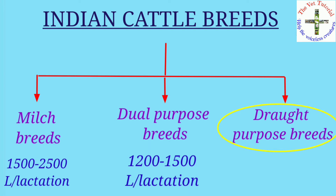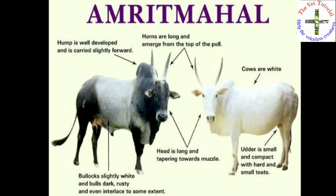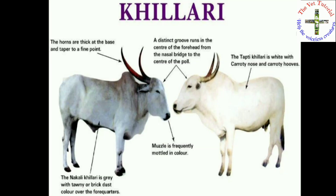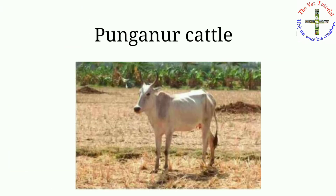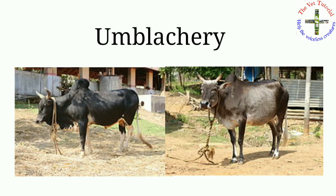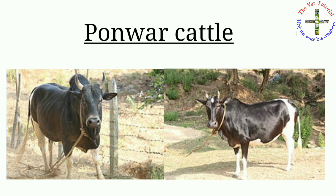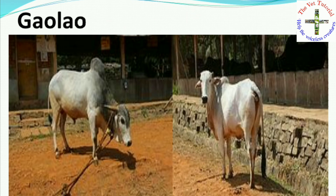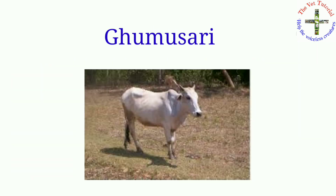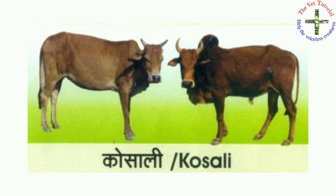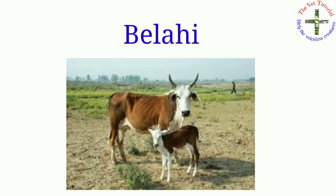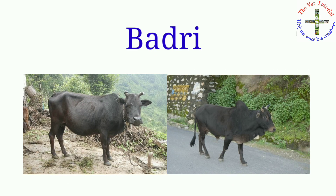In the drought purpose breed category, bullocks are excellent draft animals and cows are poor milkers. The animals included under this category are Kangayam, Malvi, Amrit Mahal, Hallikar, Khillari, Bargur, Vechur, Nagori, Bachaur, Kherigarh, Punganur, Ambli, Red Kandhari, Ponwar, Siri, Krishna Valley, Motu, Gaolao, Binjharpuri, Khariar, Pulikulam, Kosali, Malnad Gidda, Belahi, Gangatiri, Badri, and Lakhimi.